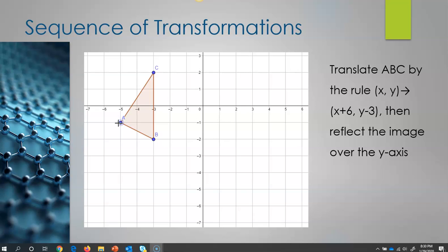So what we're going to do is we're going to take our triangle ABC here and we're going to follow the rules that are provided for us to do our transformation.